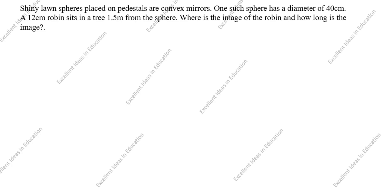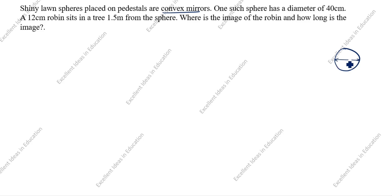Hi friends, welcome to my channel Excellent Ideas in Education. Today we are going to solve this light chapter problem. This is a very important problem — a shining large sphere placed on a pedestal, or convex mirror. One such sphere has a diameter of 40 centimeters. I'll draw the sphere here. The diameter is 40 centimeters, so the radius of curvature is 20 centimeters. What is f? f is R divided by 2.